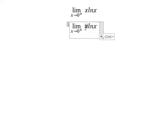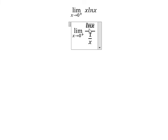We can write x ln x into ln x over 1 over x. When x approaches to number 0 from the right, this one will go to negative infinity.